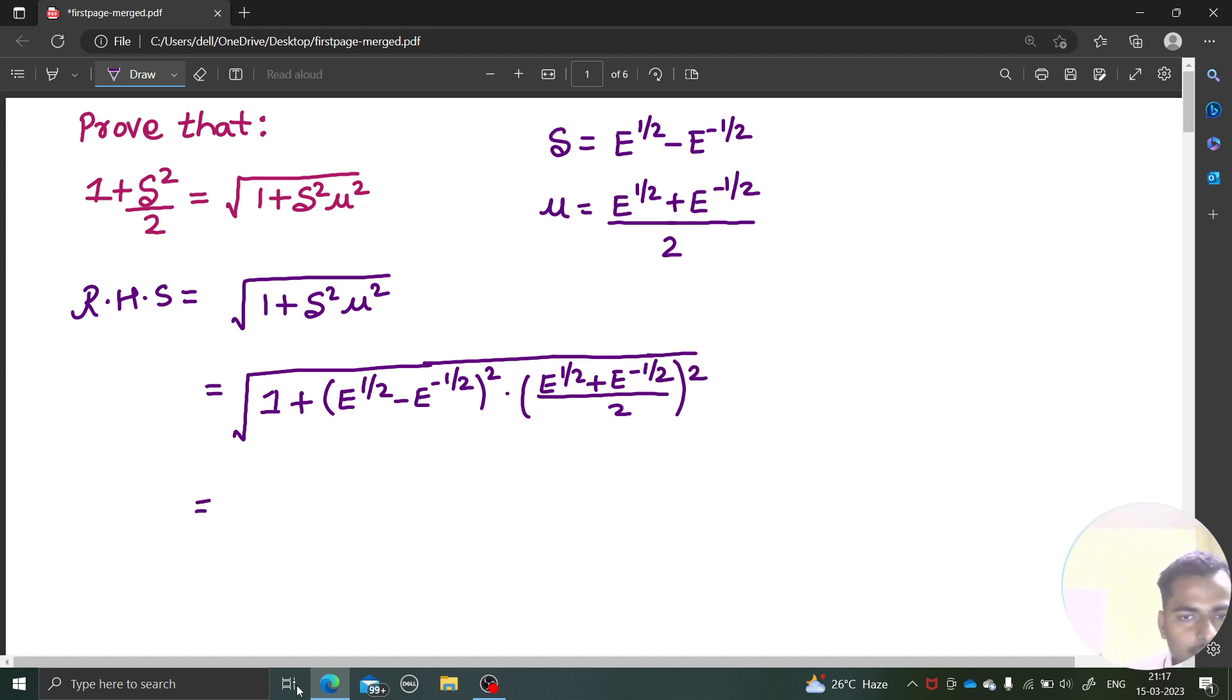This 1 by 2 square will be 1 by 4 which I can take as an LCM. 1 plus, a minus b whole square: a square plus b square minus 2ab. e power half into e power minus half is 1 simply. From here you will be getting e plus e power minus 1 plus 2, and these are divided by 4. Let's take LCM inside the root.